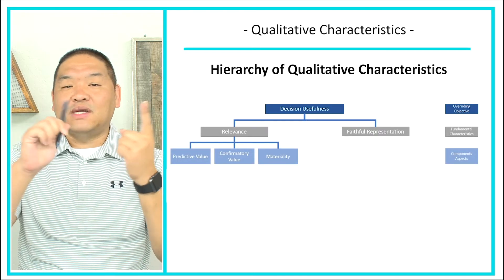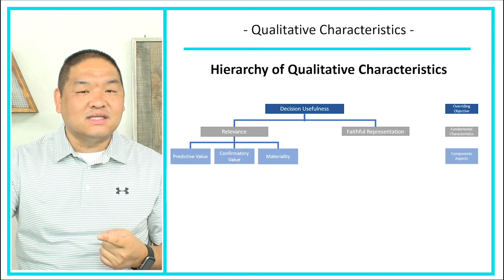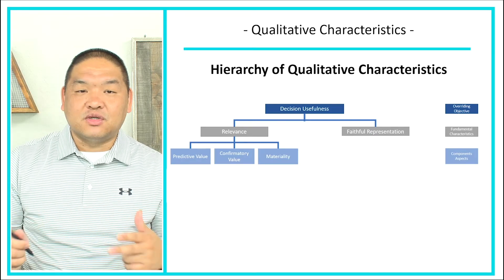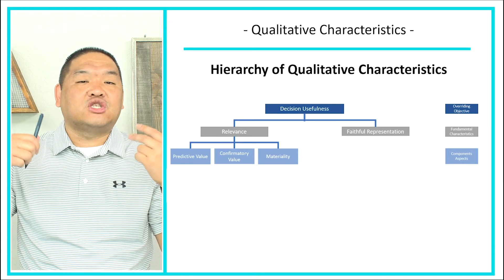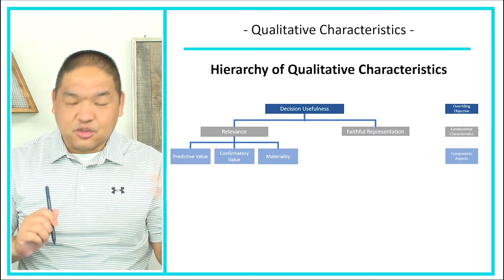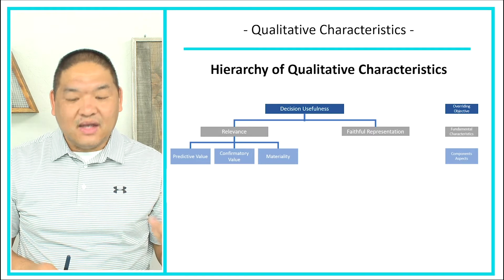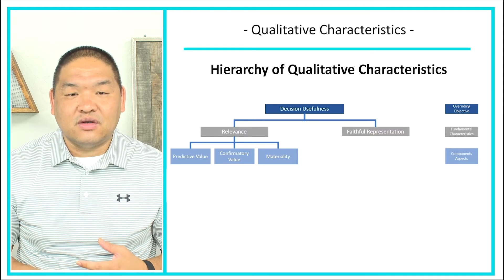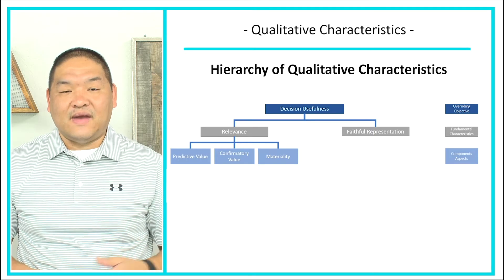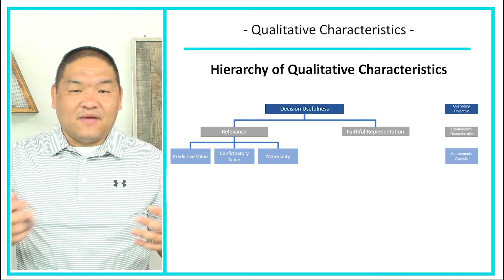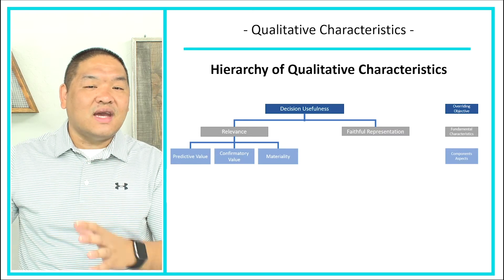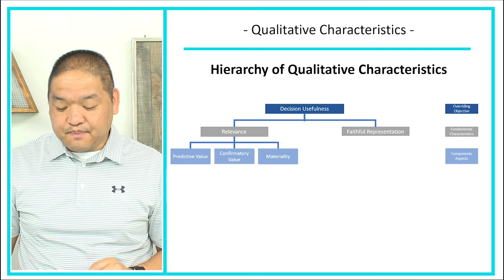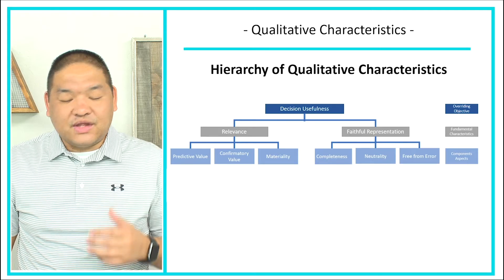Relevance means there is predictive value — I can predict what's going to happen based on past financial statements. There is also confirmatory value, meaning that when I make projections and go into the future, I can confirm or disprove my assumptions. And then there's materiality — is it material to the user? If it's material, have we included it in the financial statement? Otherwise, the financial statement might be irrelevant because we omitted something major that would have changed the investor's decision making.